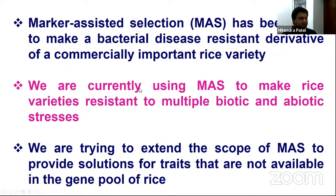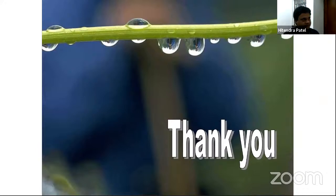To summarize: we have used marker-assisted selection to make a bacterial blight disease resistant rice variety — improved Samba Masuri. We are using marker-assisted selection to make rice varieties resistant to multiple biotic and abiotic stresses. And we are extending the scope of marker-assisted selection to provide solutions for traits not available in the gene pool of rice.